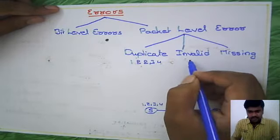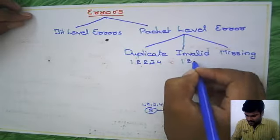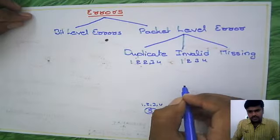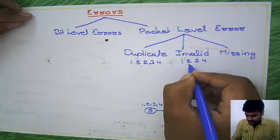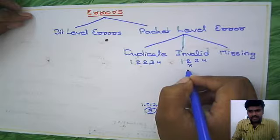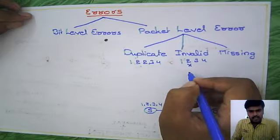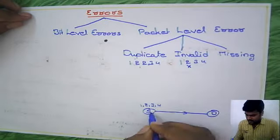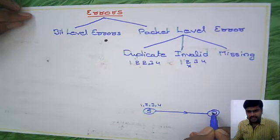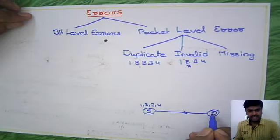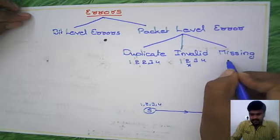In the invalid case, you received all packets one, two, three, four without duplicate, but one packet is corrupted. When you calculate the CRC at source and destination, if they are different, your data is corrupted. You didn't receive the original data, so this case is invalid.